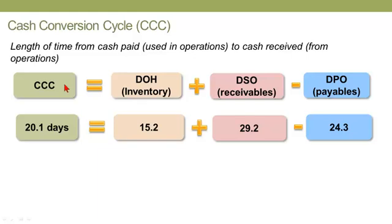Finally, from the previous video but included here for completeness: the cash conversion cycle. Technically not a ratio, it gives us a sense of the company's working capital. The formula is: days inventory on hand (days inventory outstanding) plus days sales outstanding, minus days payable outstanding. The first two are uses of cash — cash is tied up in inventory and receivables. The third is a source of cash — extending the time before paying vendors. The cash conversion cycle measures the length of time from when cash is put into operations to when it is ultimately received back.